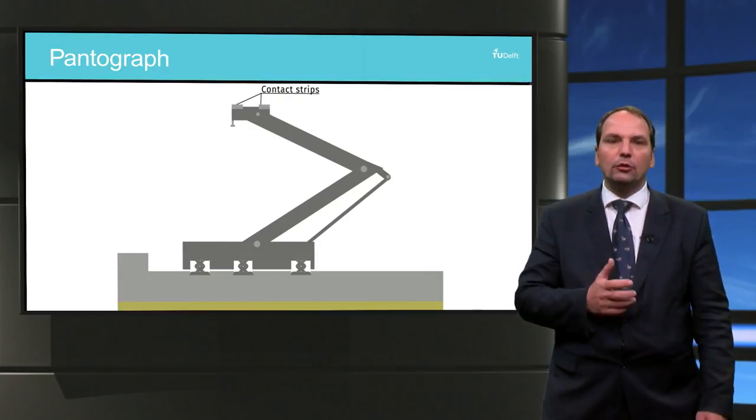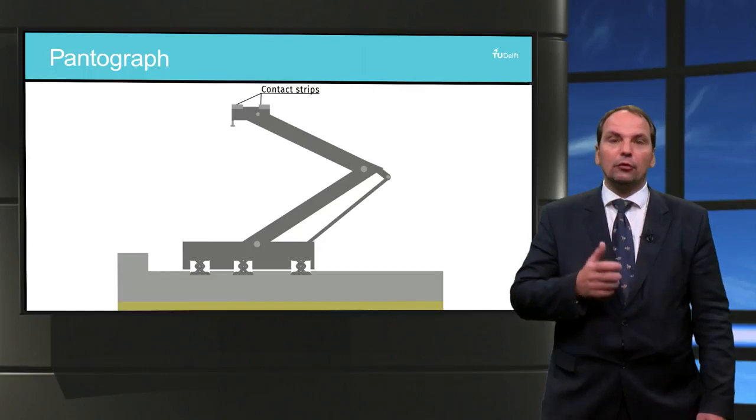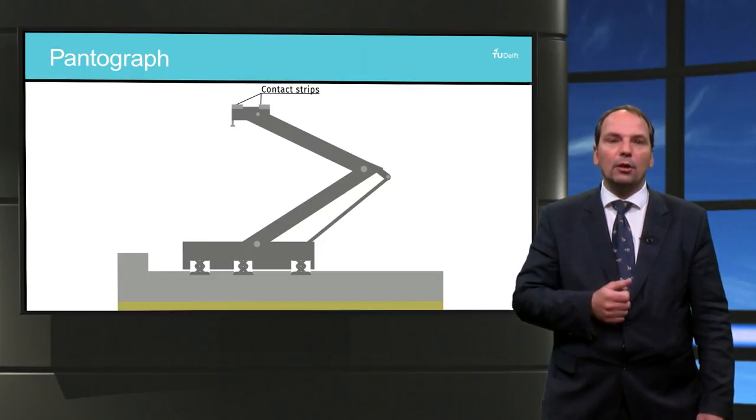At the top you can see the horizontal part of the pantograph, which is called the head of the pantograph. The head is made of carbon strips. The number and size of these strips depend on the type and magnitude of the current that is going to be transmitted.